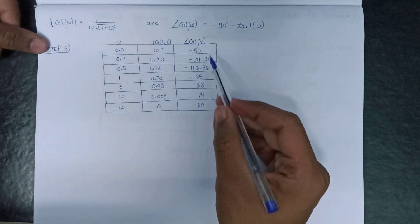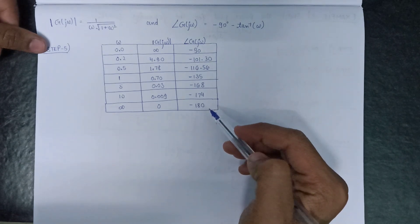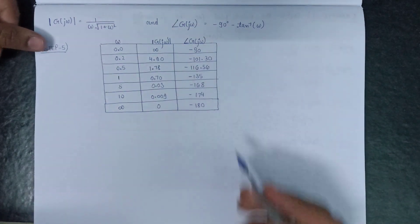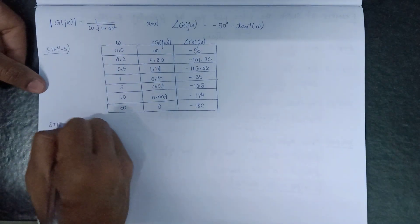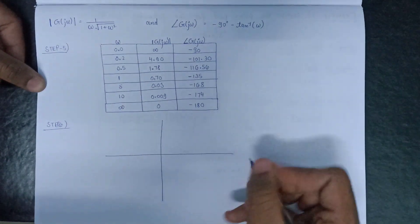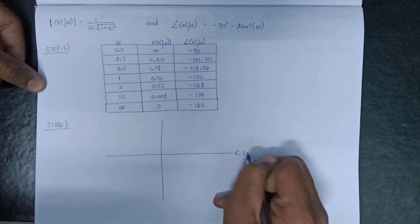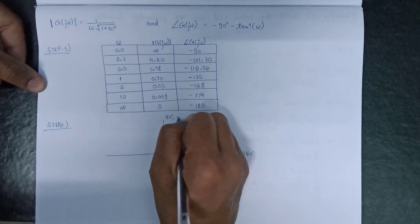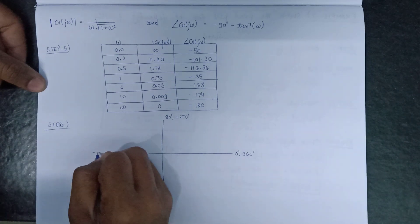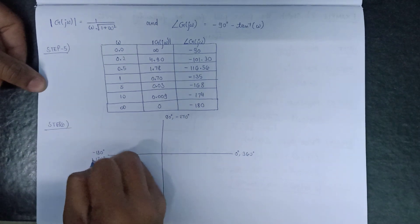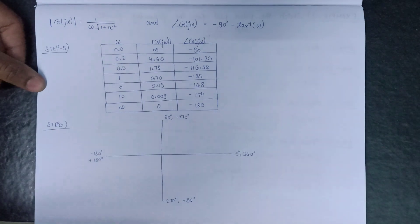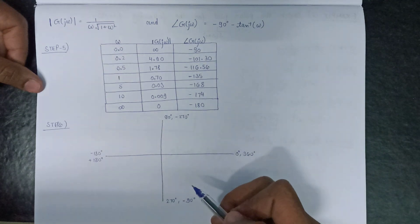Using a scientific calculator, all the calculations have been done and the table is filled in. Moving on to step number 6, that is plotting of the polar plot. The four quadrant axes are: 0° or 360°, 90° or −270°, −180° or +180°, and 270° or −90°.